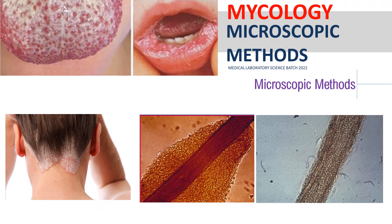To easily visualize this, we can use the enhancer stain which is your calcofluor white. However, using an ultraviolet Wood's lamp, endothrix infection will not fluoresce, whereas some ectothrix infection may fluoresce bright green or yellow-green.